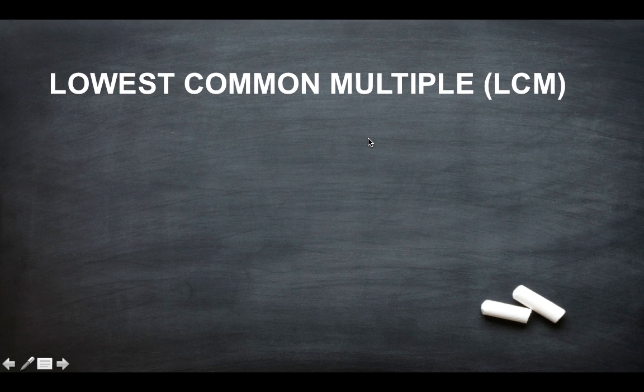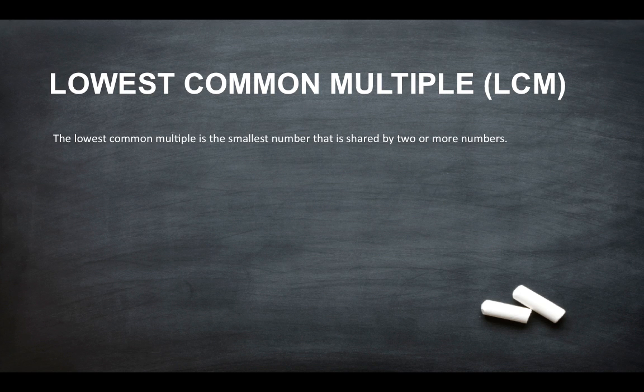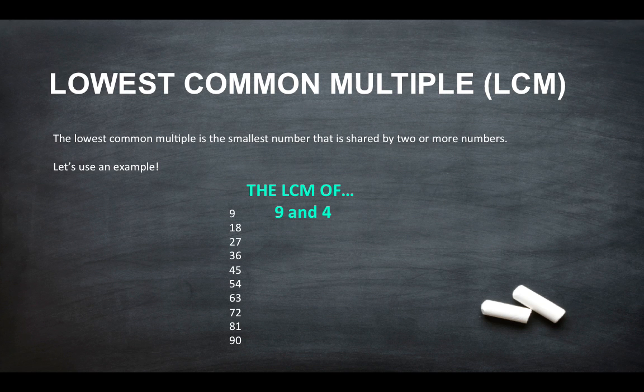Okay, so the lowest common multiple. So the lowest common multiple is the smallest number that is shared by 2 or more numbers. So let's use an example. So the lowest common multiple of 9 and 4. So first of all you need to do the first few 9 times tables. So I've gone up to 90 here.